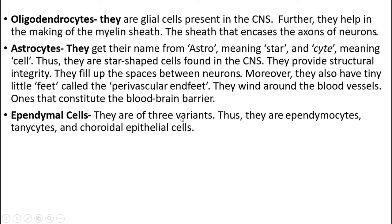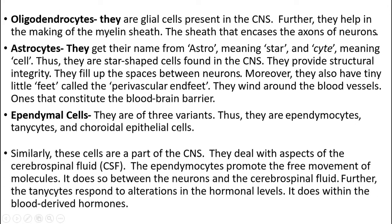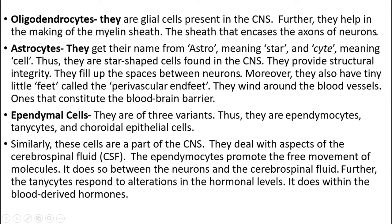The last type is ependymal cells. They are of three variants: ependymocytes, tanycytes, and choroidal epithelial cells. These cells are part of the central nervous system and deal with aspects of CSF. Ependymocytes promote free movement of molecules between neurons and the cerebrospinal fluid. Tanycytes respond to alterations in the hormonal level within blood-derived hormones.